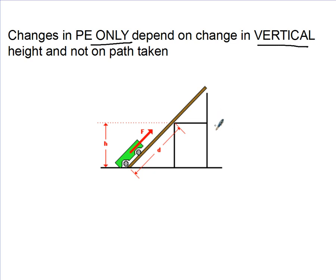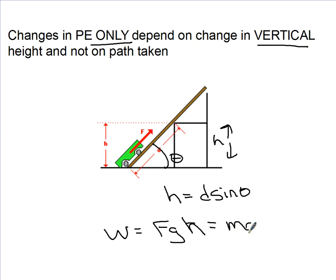So if I lifted up a height H and going back to our trig, we know that H is D sin theta. Oh my gosh, there's some ugly trig where theta is this angle. Now, the work done is always going to be the same. The work due to gravity is going to be FG times H, which is MGH. Didn't we just do this?